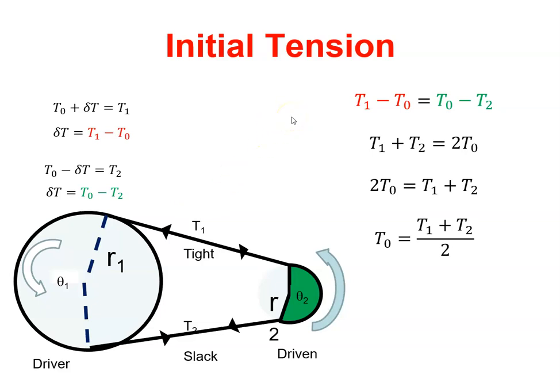Okay, I just want to talk a little bit here about initial tension. So let's say the pulley isn't rotating at all, so the belt is on and it's tightened up to an initial tension, T0.